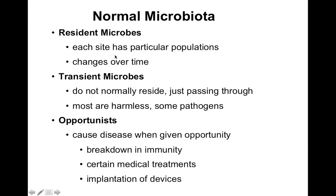Resident microbes: each site has particular populations that change over time, and they differ from person to person. Transient microbes don't normally reside in the body — they're just passing through. Most are harmless, but some are pathogens. All pathogens are transient microbes, but not all transient microbes are pathogens. For example, microbes found in Activia yogurt aren't normally in our gut, but when we consume it we bring them in; nine times out of ten they don't stay long and are passed out through the stool.